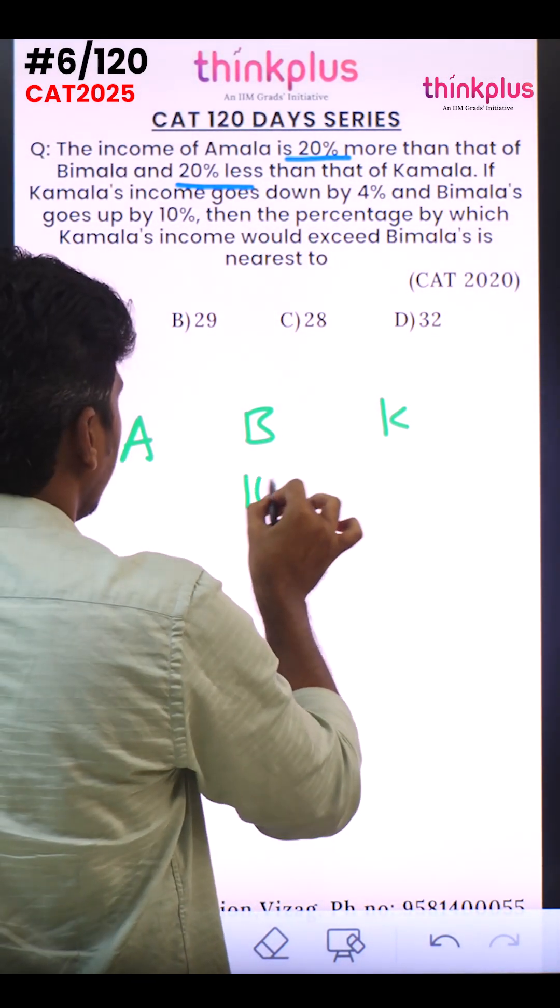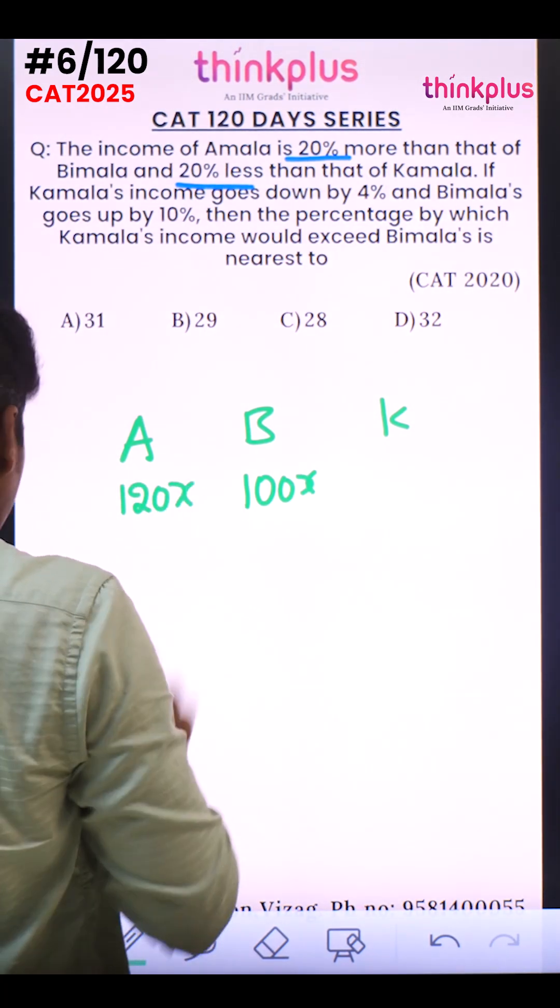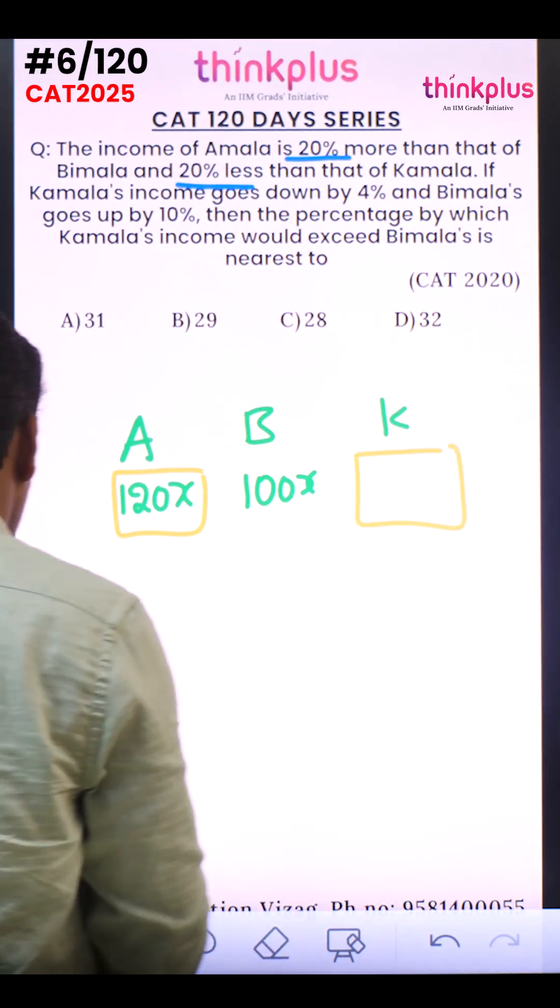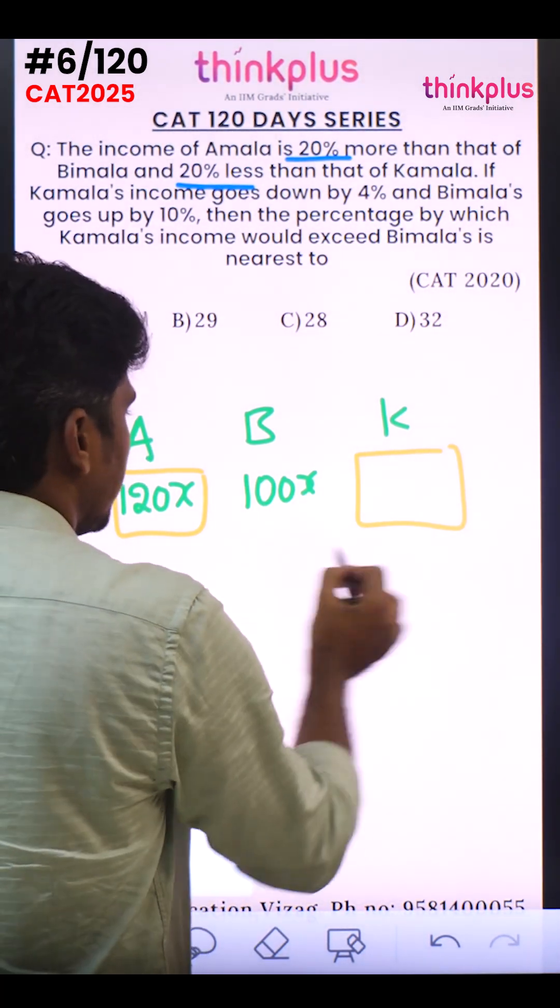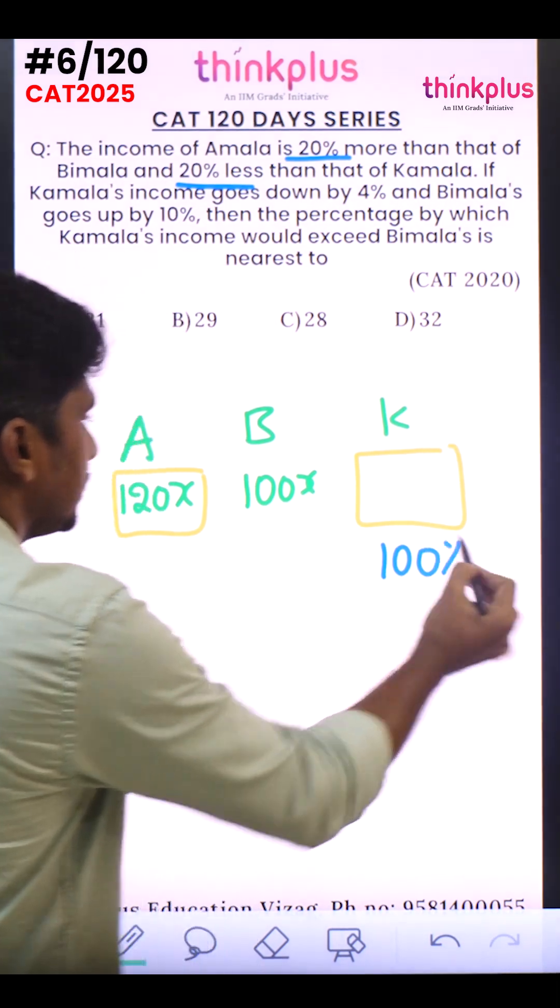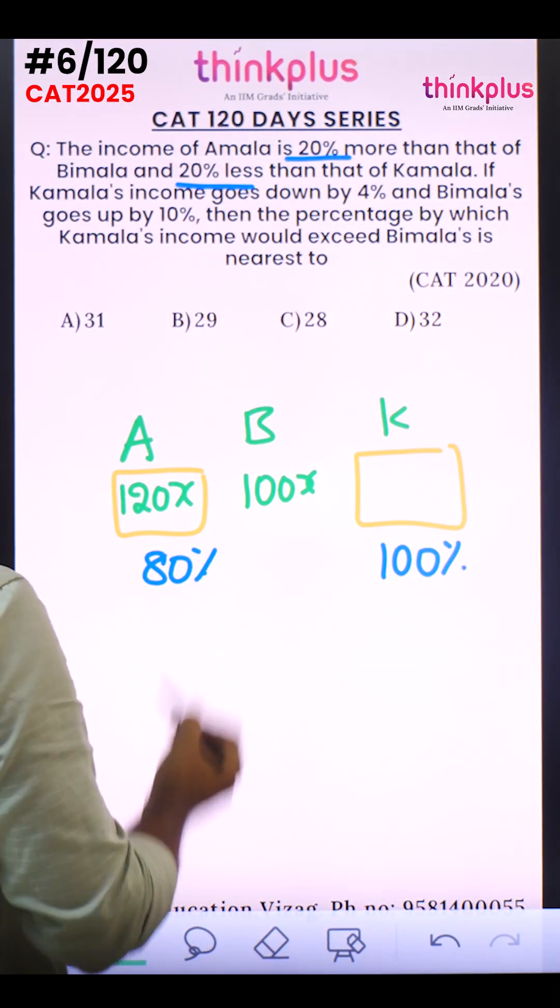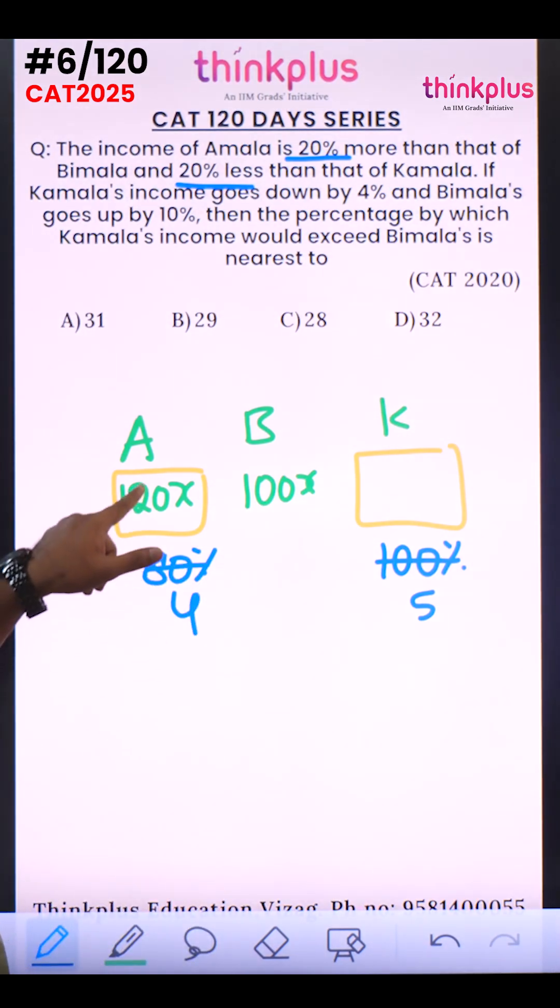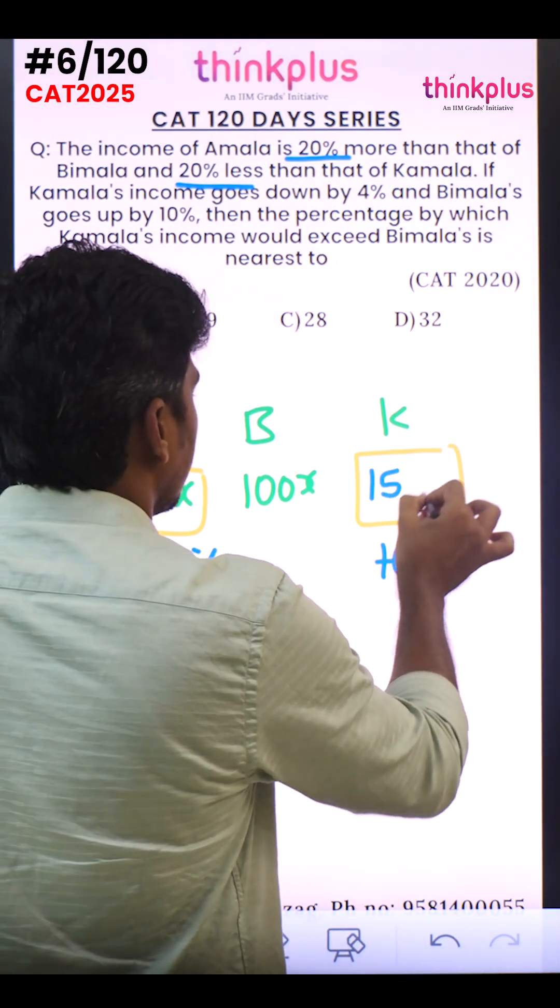So if I take this as 100x, this will become 120x. And the same 120x is 20% less than Kamala's number. Whatever Kamala's number, compared to this it is 20% less. Means if this is 100 percentage, this will become 80 percentage. If I take this ratio, this is 5 parts, this is 4 parts. 4 parts is 120, 1 part is 30, 5 parts is 150x.